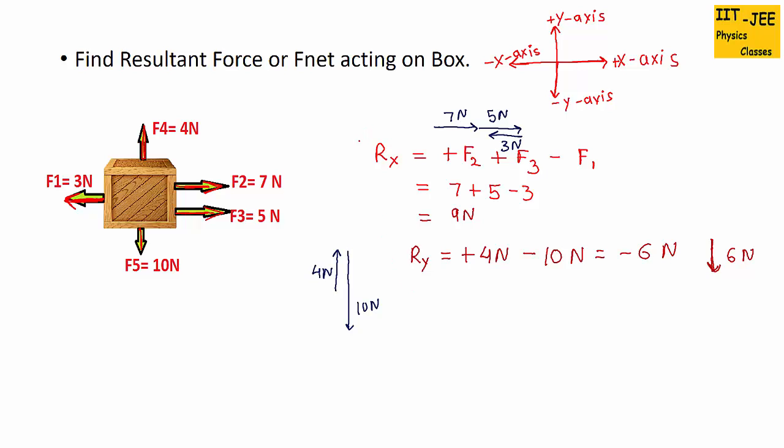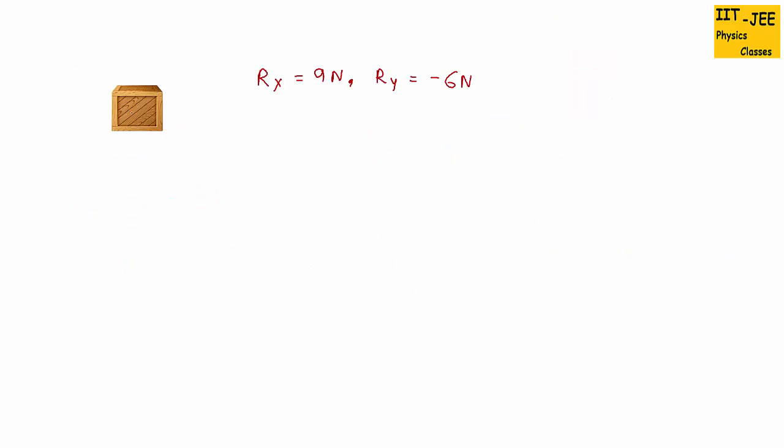So we have now Rx and Ry. So on this box actually only 2 resultant forces are acting. First one is the resultant of horizontal is 9N. It is positive, so it will be towards east or towards positive x-axis.